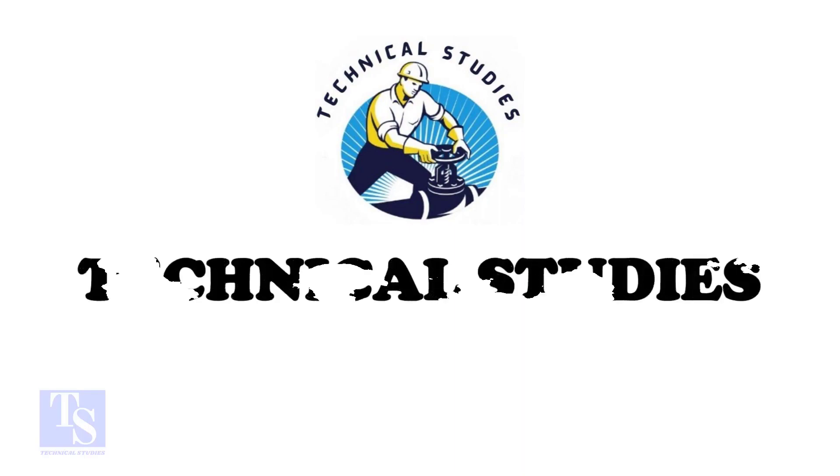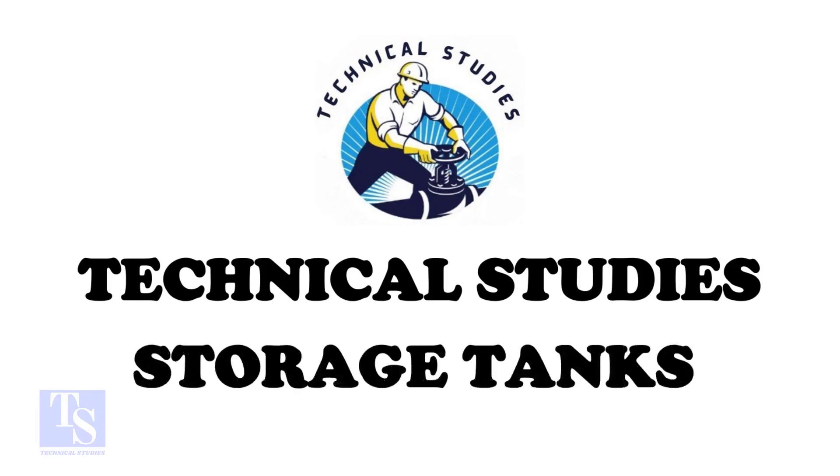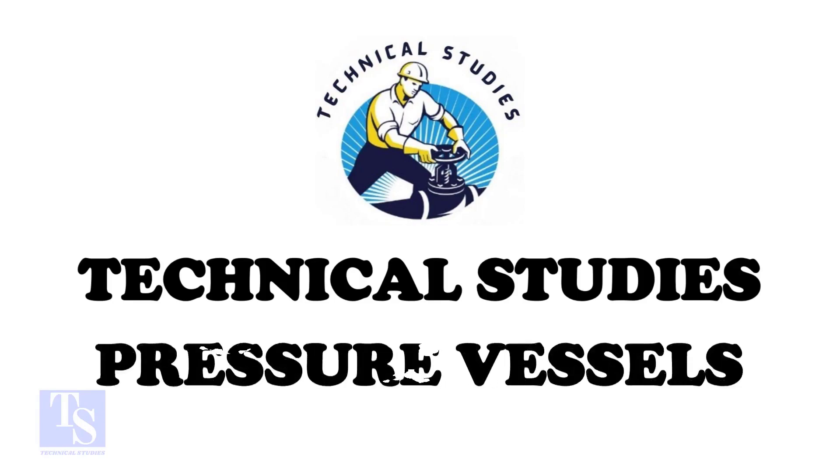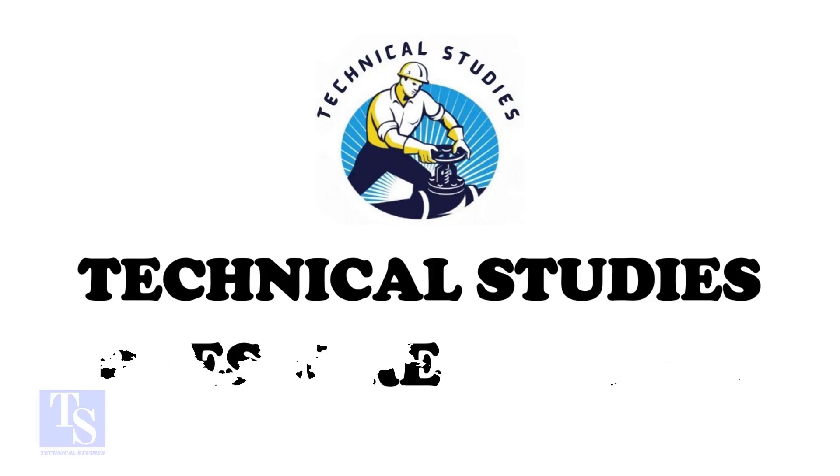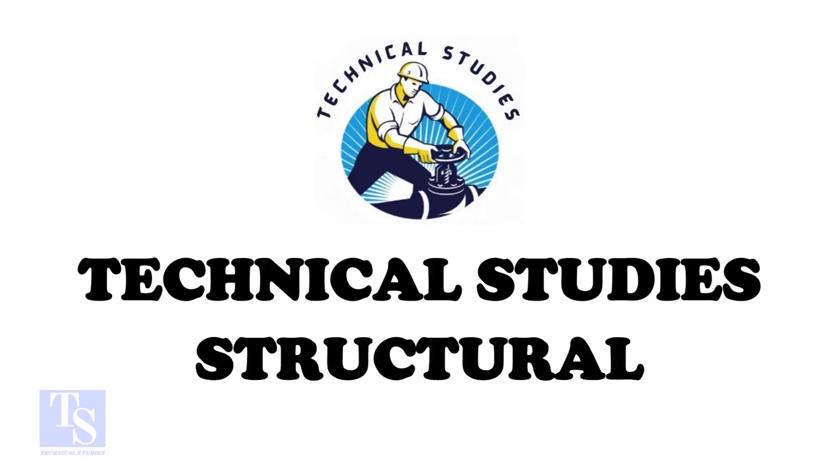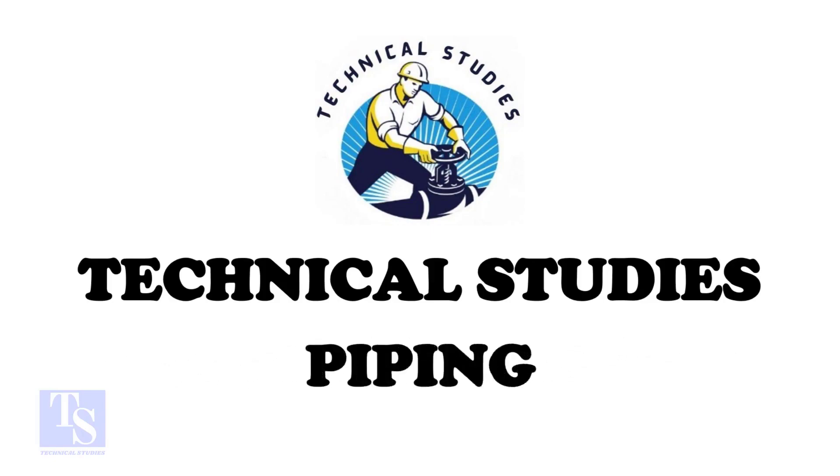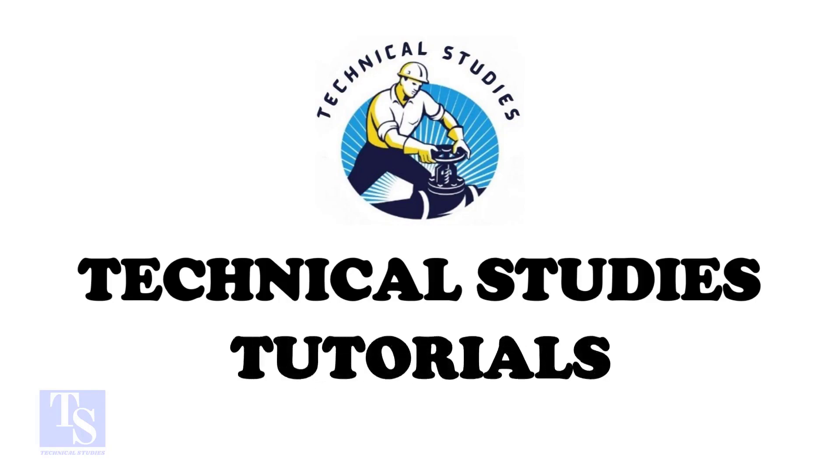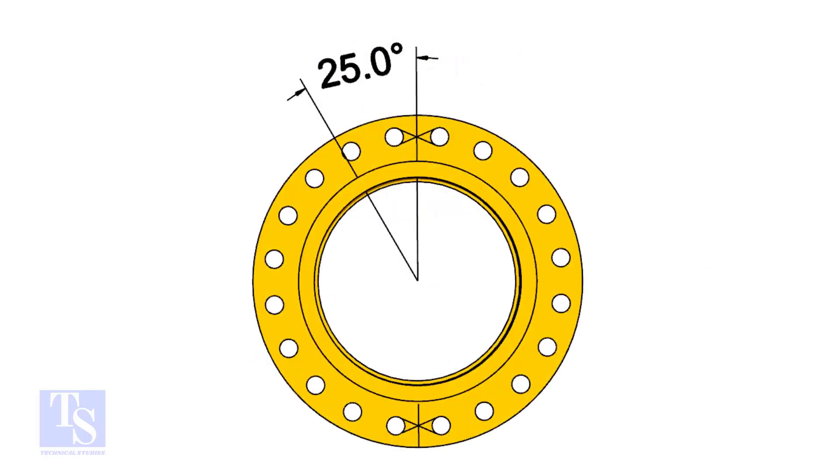Hi friends, welcome to Technical Studies. In this video, we will learn how to fit up a flange to a fixed pipe in any degree. I choose a slip-on flange for the example, but the calculation and the procedure are same for all flanges. The pipe and the flange size is 16 inch, and the flange will rotate 25 degrees anticlockwise.